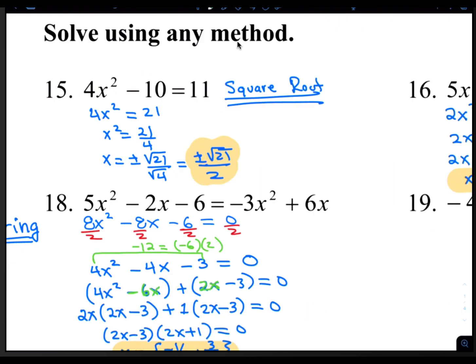For number 15, it says solve using any method. I'm choosing the square root method because I see x is squared and that is the only variable in the problem. So let's start by adding 10 to both sides. 10 plus 11 is 21. Then divide by 4, so x squared is 21 over 4. Then take the square root of both sides, so x is plus or minus the square root of 21 over the square root of 4, which is plus or minus the square root of 21 over 2.